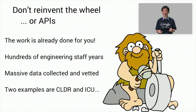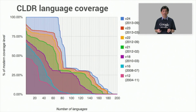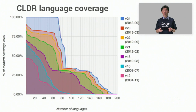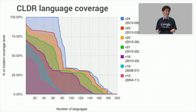Two key examples are CLDR and ICU. CLDR contains tens of megabytes of language and regional data that drives the ITN APIs. Experts around the world continue to compile and vet this data. This graph of CLDR data shows the amazing growth of that data over the past 10 years, so it would be very difficult to replicate this on your own.